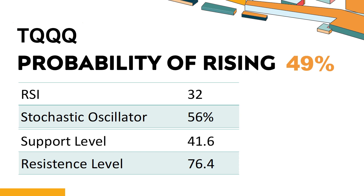TQQQ's short-term support level is 48.8. If it falls below 48.8 during the session, it will have a chance to test 41.6. TQQQ's short-term resistance level is 64.6. If it breaks through 64.6 during the session, it will look up to 76.4.